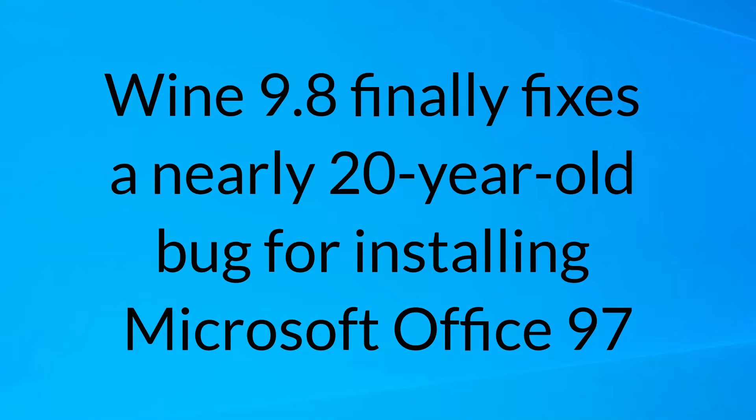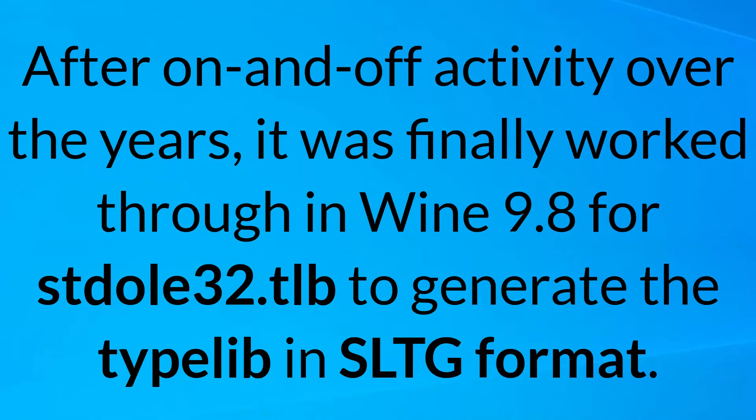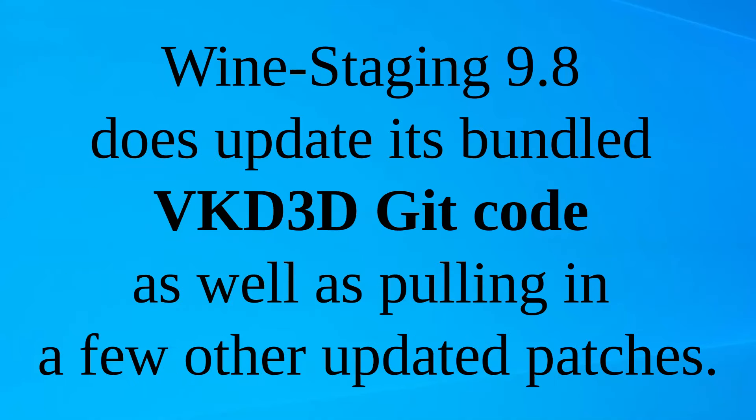Wine 9.8 finally fixes a nearly 20-year-old bug for installing Microsoft Office 97. The bug report from 2005 noted that Wine failed to install Microsoft Office 97 on upstream Wine at the time. After on-and-off activity over the years, it was finally worked through in Wine 9.8 for stdole32.tlb to generate the type lib in SLTG format.